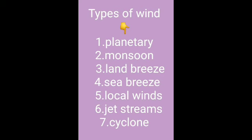Local winds include both land breeze and sea breeze, due to the difference in pressure of land and sea. Next, we saw about jet streams — the air current in the upper layer of the atmosphere is called jet streams, relating to the arrival and departure of wind in India. Then we saw about cyclones — a low pressure area having winds which spiral inwards is called a cyclone.